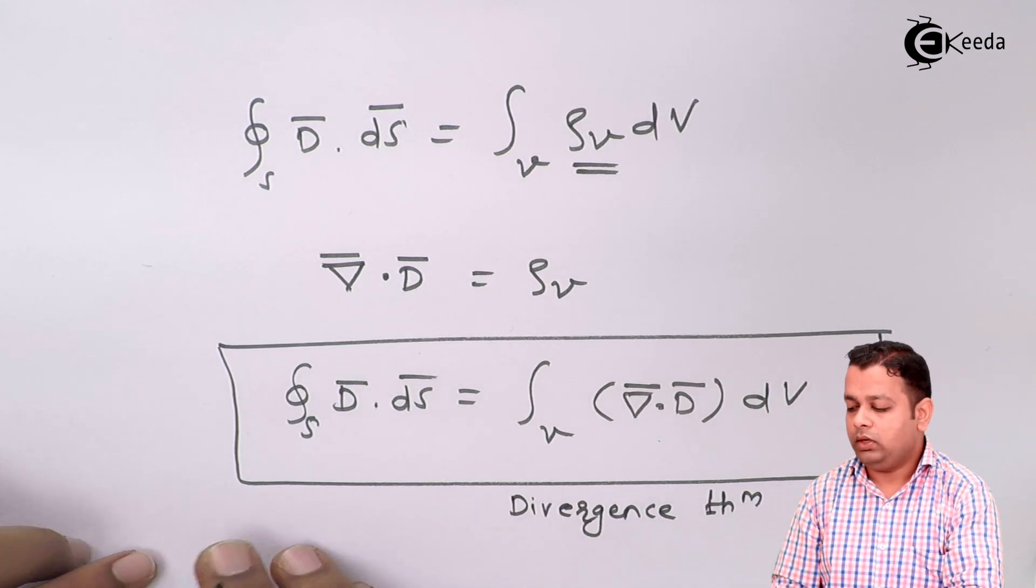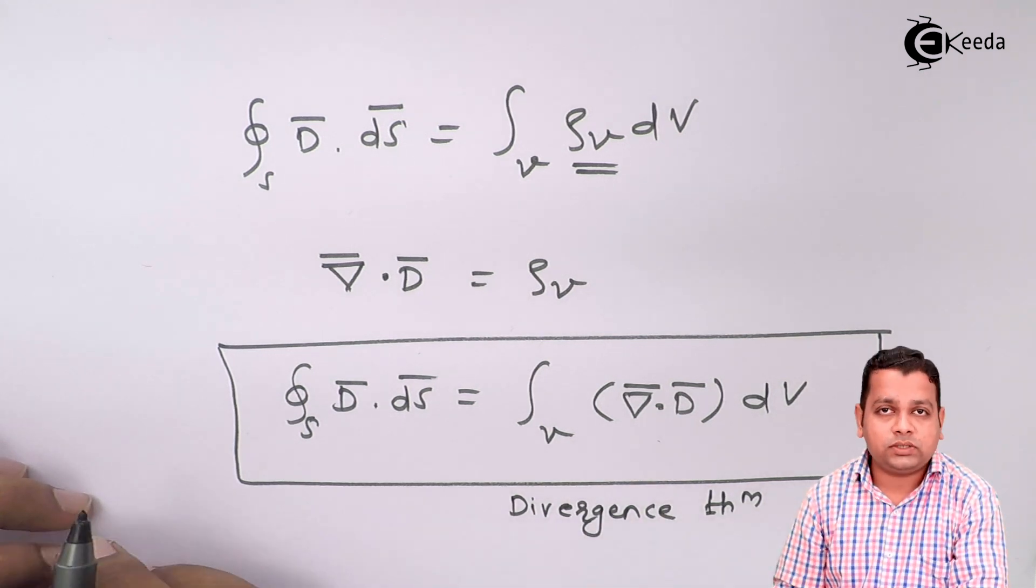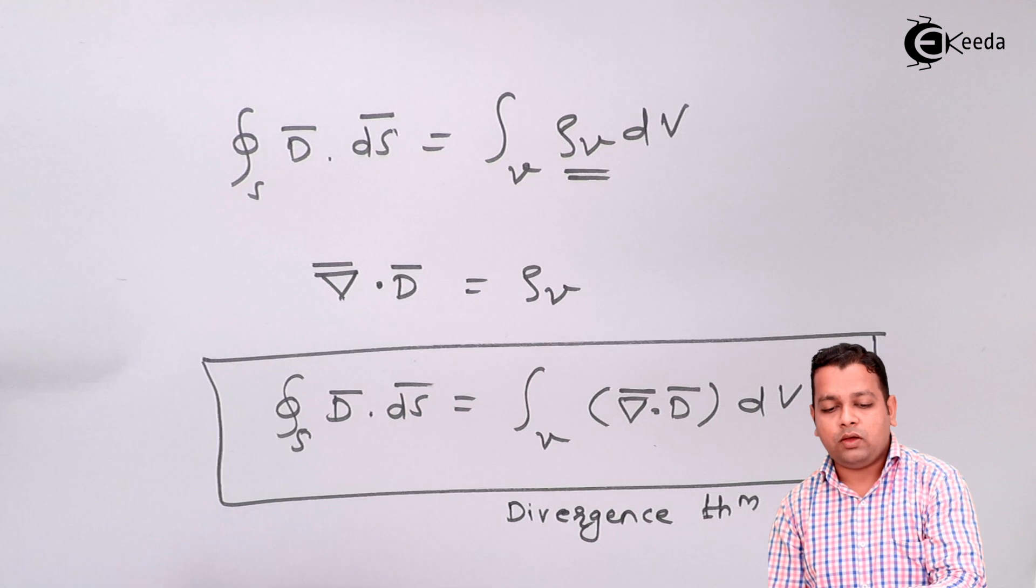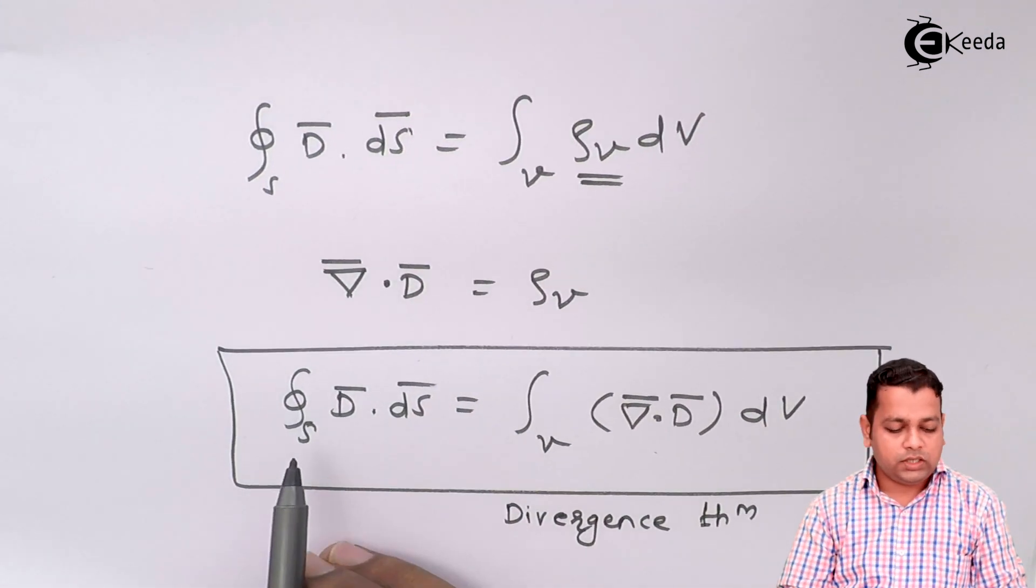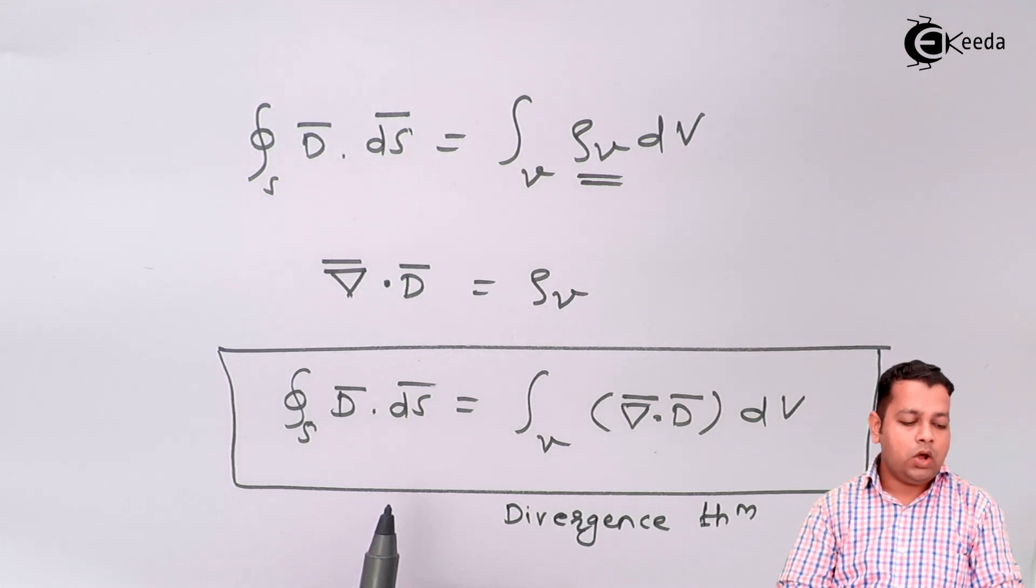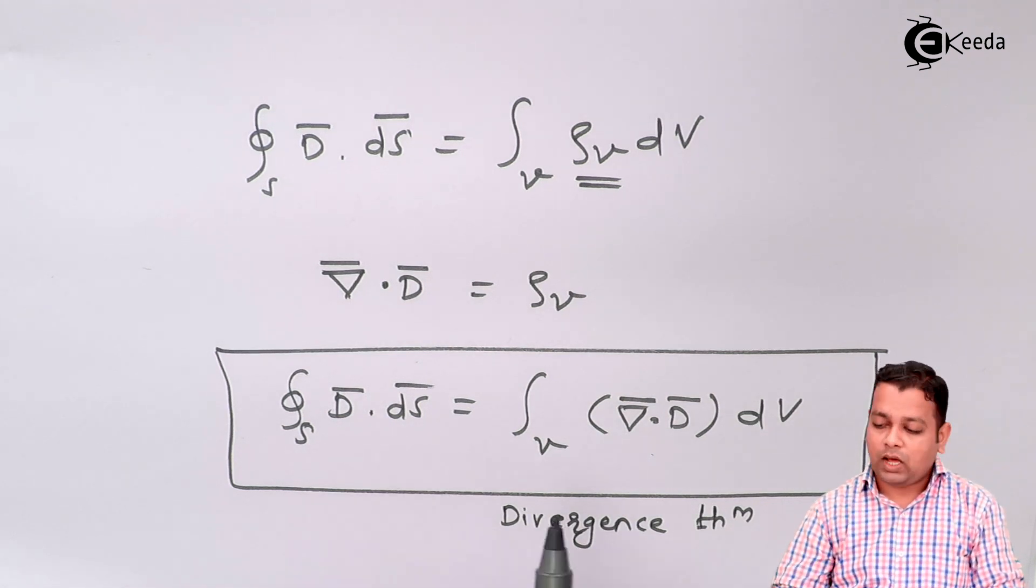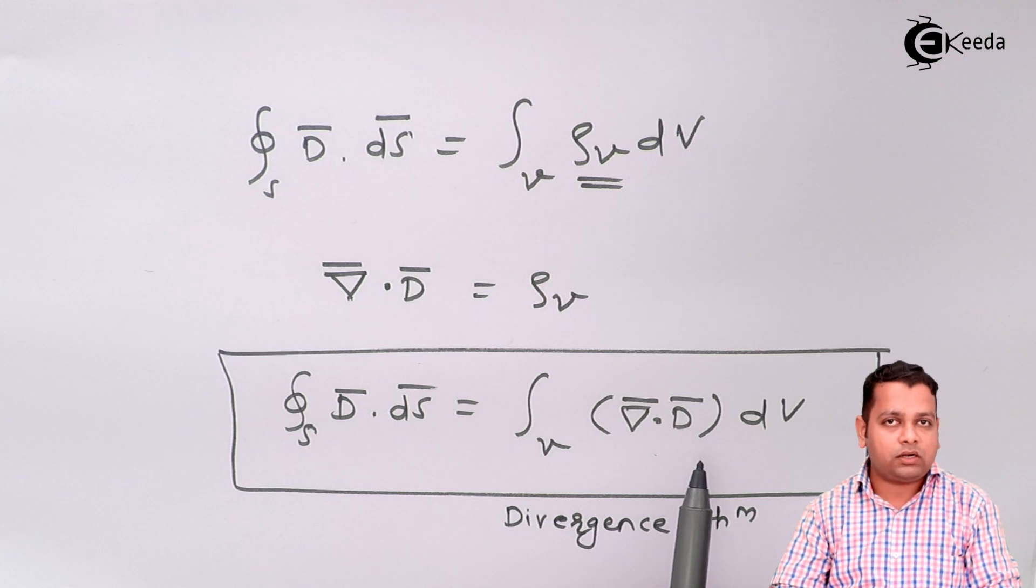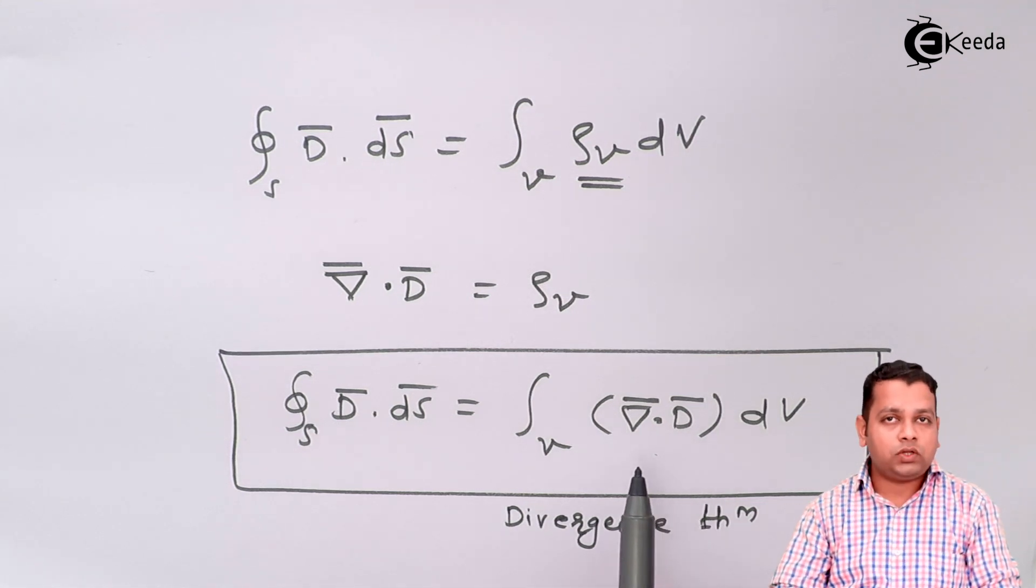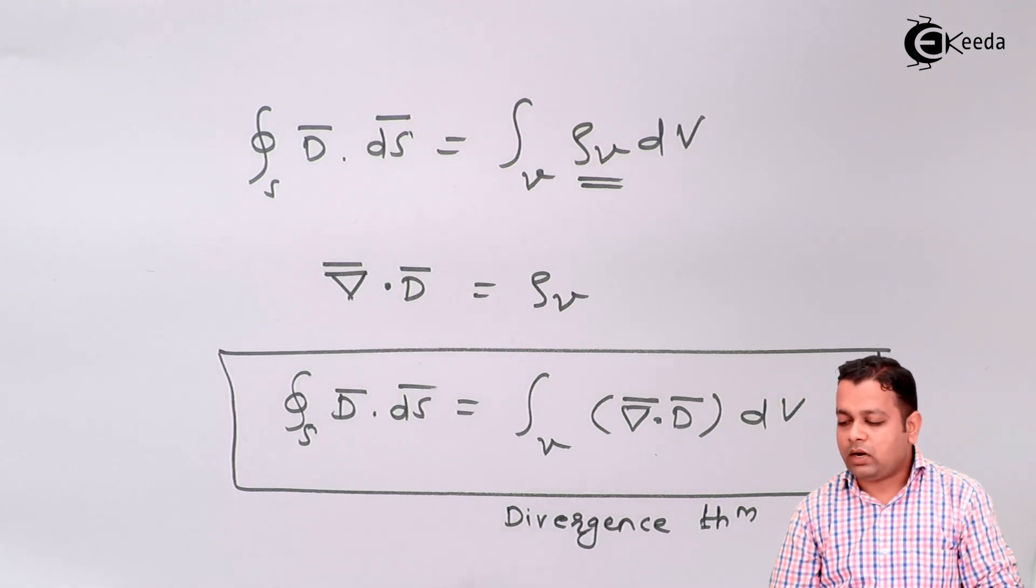Divergence theorem. Now this is the divergence represented for electric flux density. The statement can be given like this: the integration of the normal component of a vector field, electric flux density, over a closed surface is equal to the integration of the divergence of the same vector field, that is electric flux density, throughout the volume enclosed by the closed surface. So this is divergence theorem.